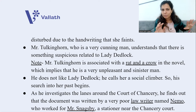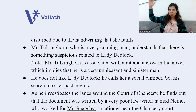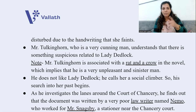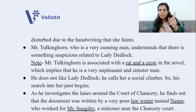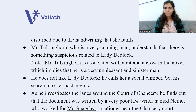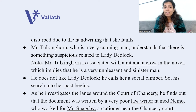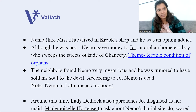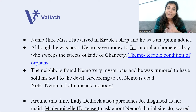Mr. Tulkinghorn dislikes Lady Dedlock because he thinks she is a social climber who married for money and is not from a noble background. He decides to dig into her past. Investigating the lanes around the Court of Chancery, he discovers that the document was written by a very poor law writer named Nemo, who works for Mr. Snagsby, a stationer near the Chancery Court. Nemo also lived in Krook's shop, just like Miss Flite, and was a heavy opium addict.